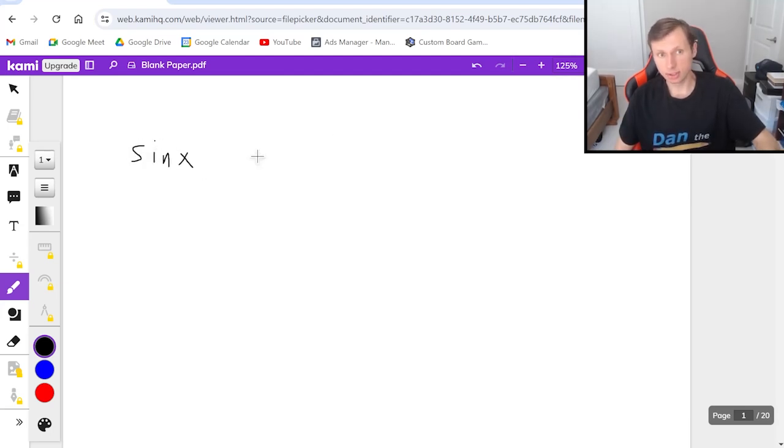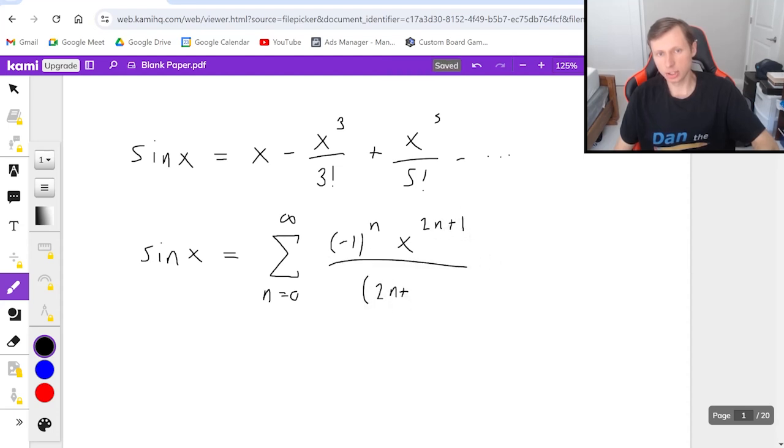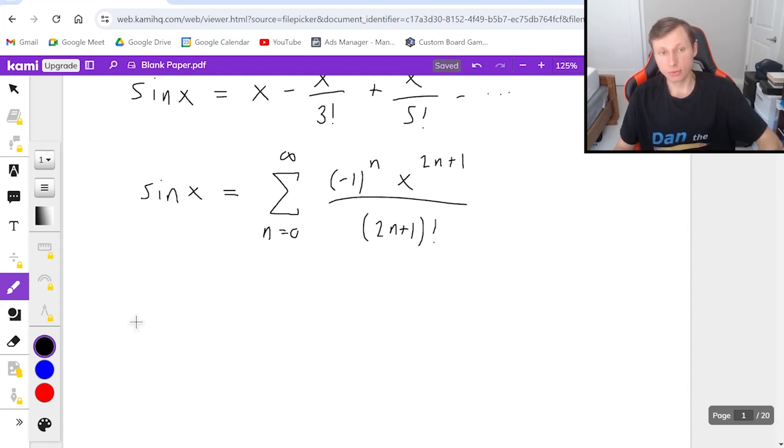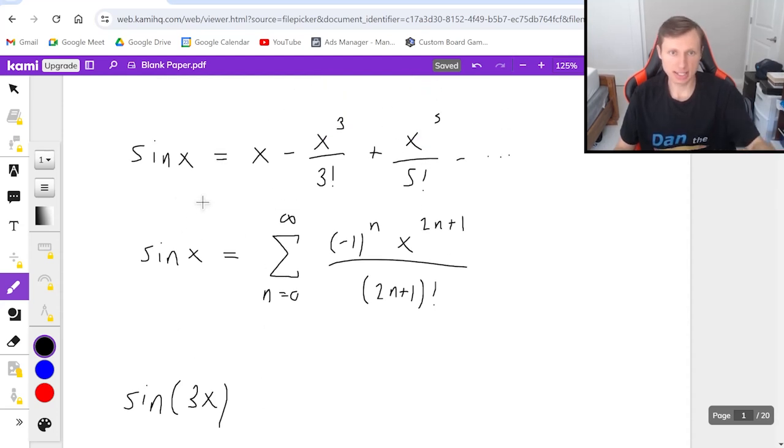Let's say I give you the Taylor series, or the McLaurin series, for sin x, which is x minus x cubed over 3 factorial plus x to the fifth over 5 factorial minus dot dot dot. Or maybe they even give it to you in the series formation from n equals zero to infinity of negative 1 to the n times x to the 2n plus 1 over 2n plus 1 quantity factorial. They might give you something like this. And then they ask you to write the Taylor series for sin of 3x, just using the fact that you know sin x here.